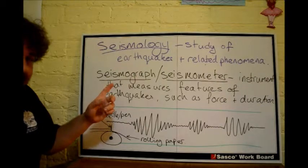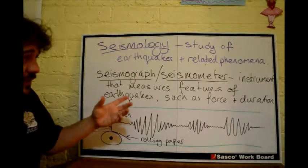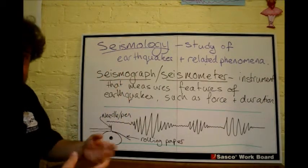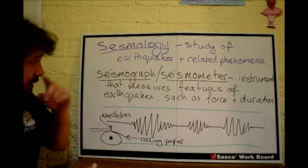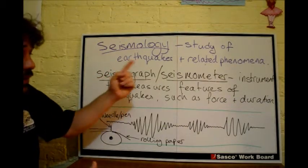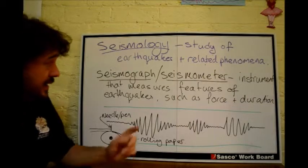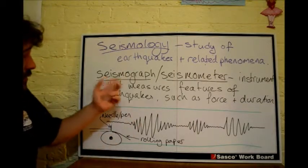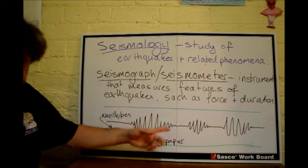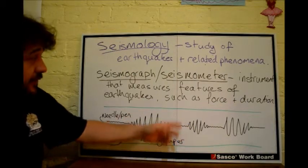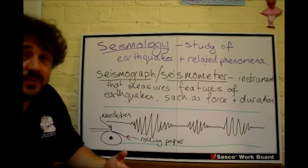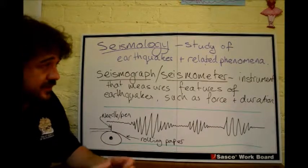Next, we have basically one of the tools that a seismologist — that's the scientist who studies seismology — would use, and that's a seismograph or seismometer. Seismo means earthquake, graph meaning to make a graph, or meter to measure it. That's what it does.